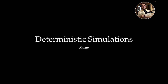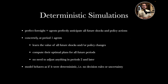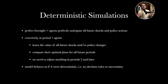Let me briefly start with a quick recap on deterministic simulations. The idea is that we are looking at the model under perfect foresight. The agents in our model perfectly anticipate all future events — all shocks and all policy changes that will occur. In the impact period, let's call this period one, agents learn the value of all future shocks and policy changes. Based on this, they compute optimal plans for all future periods and there is no need to adjust anything later on. So the model behaves as if it were deterministic.